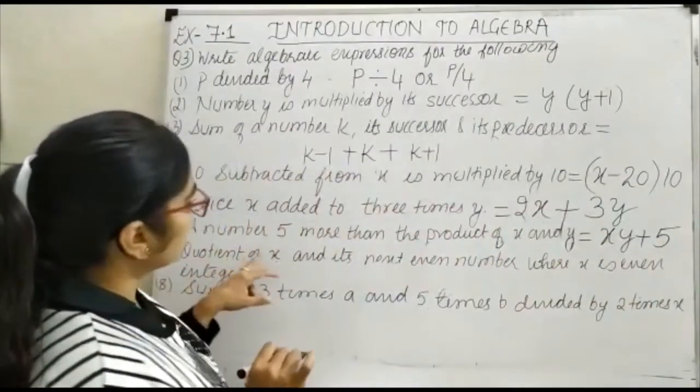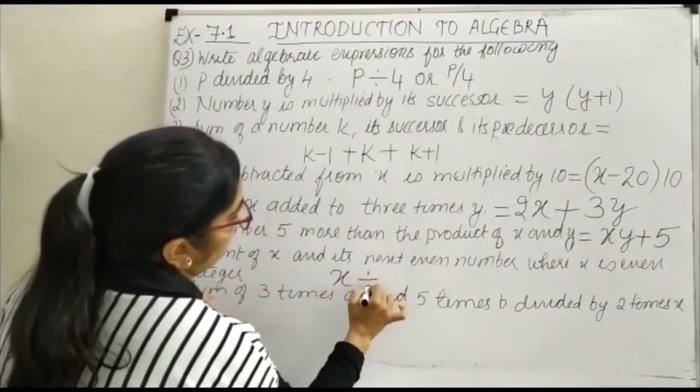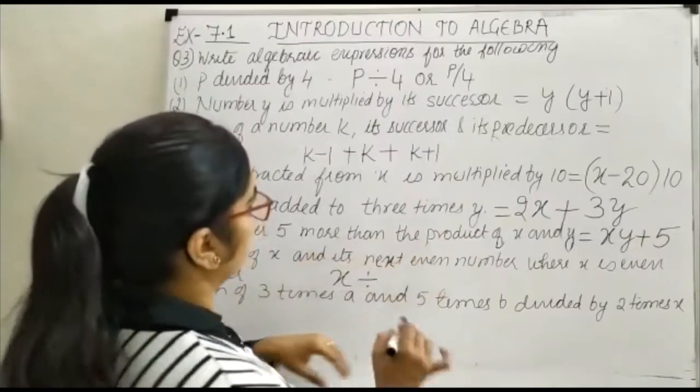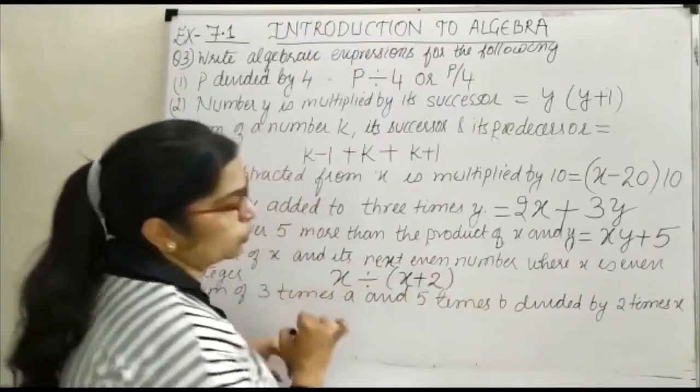Quotient of x - quotient means we have to divide x. Divide by what? By its next even number. The next even number will be x plus 2.